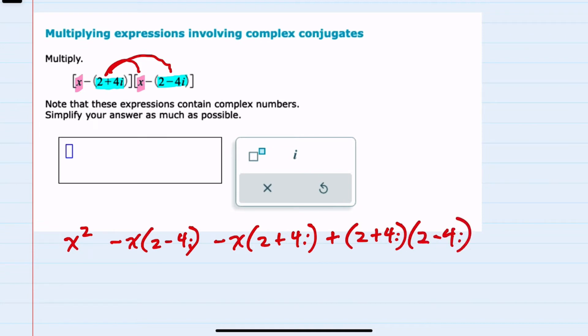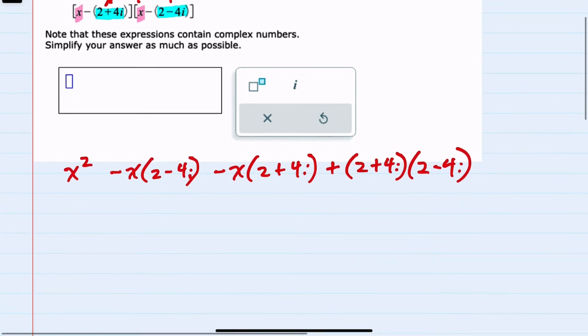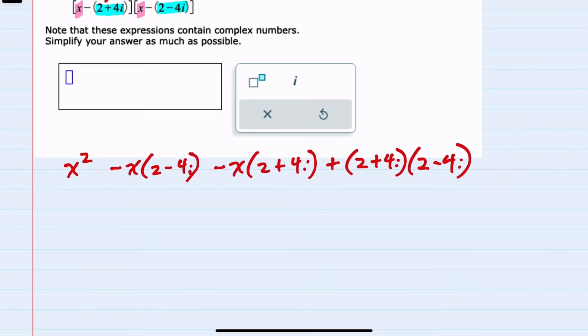So we've done all of the distributing. We now need to simplify. I'll bring down that x squared. And then for the second term here, I can distribute negative x times 2 is a negative 2x. Negative x times a negative 4i is a positive 4ix.